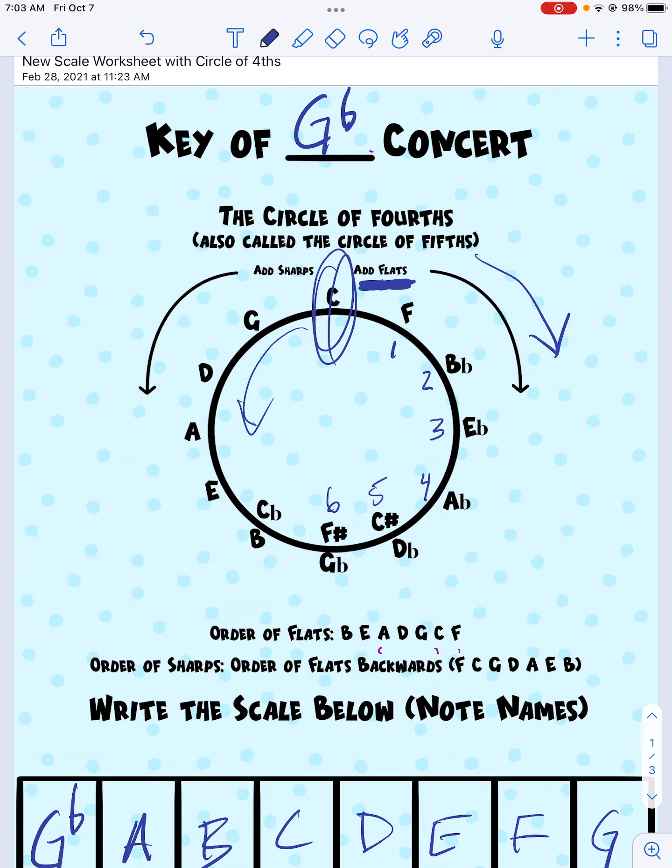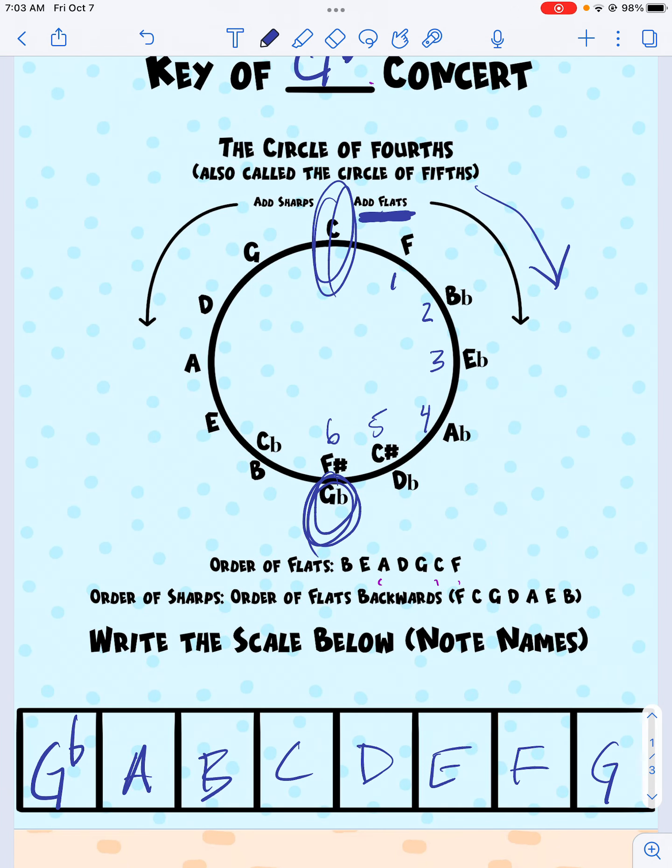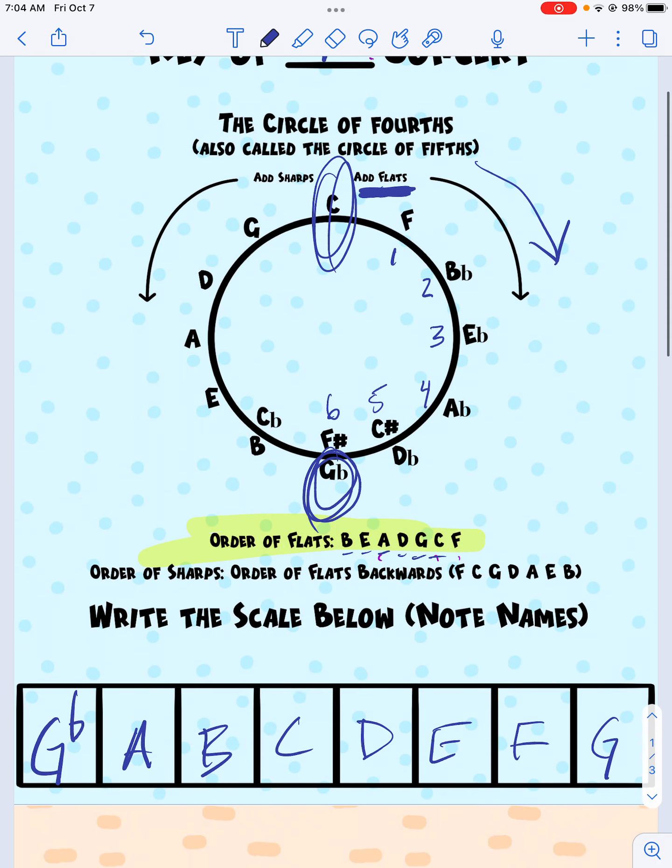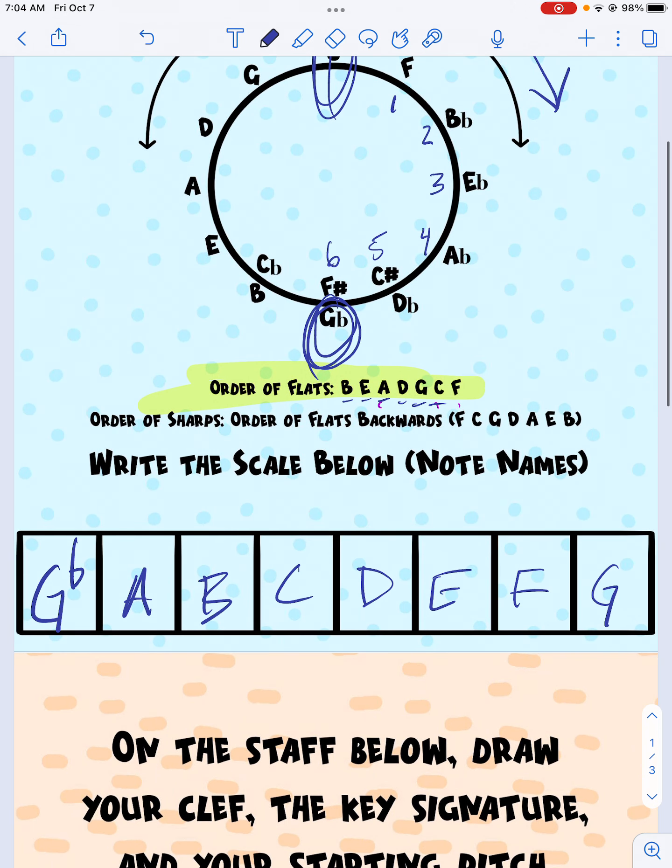We could go the other way and add six sharps, but we're band children, so we're more used to flats. So we go that way and we get down to G-flat right there, which is six flats. Now, what are the flats? We go here for the order of flats. They're always in the same order. So we've got B, E, A, D, G, C are our six flats.